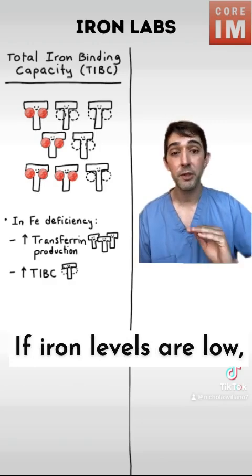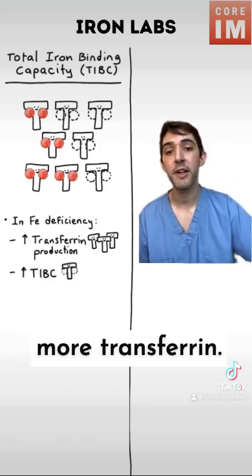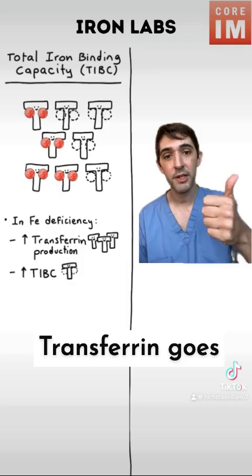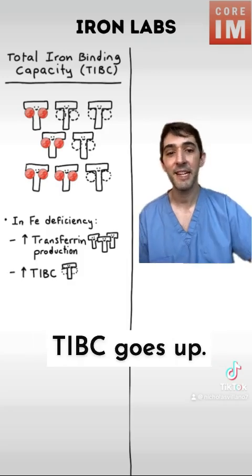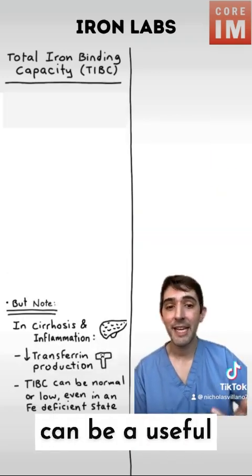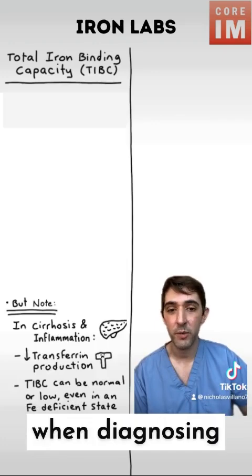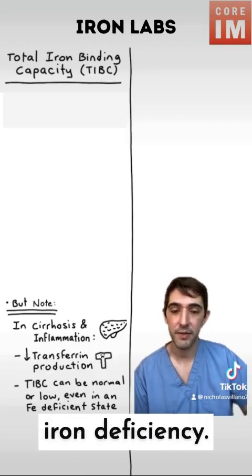So the TIBC is our surrogate for transferrin. If iron levels are low, your body makes more transferrin. Transferrin goes up, which means the TIBC goes up. So the TIBC can be a useful addition to ferritin when diagnosing iron deficiency.